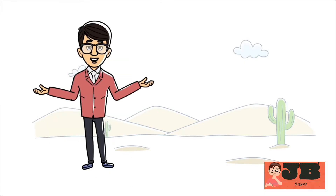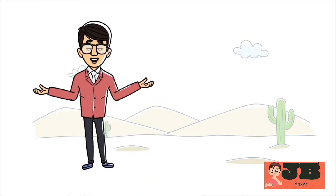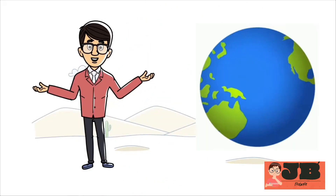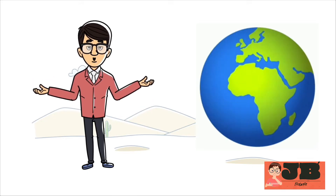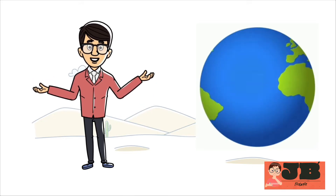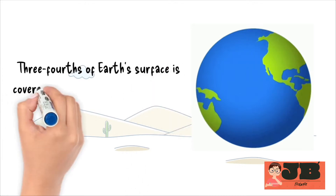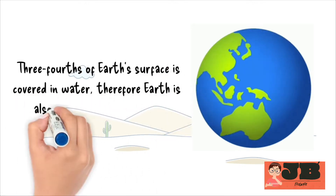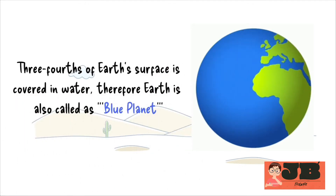Imagine that you are an astronaut looking at Earth from space. What do you see? A beautiful, mostly blue sphere. This blue color comes from the vast amounts of water covering our planet. In fact, nearly three-fourths of Earth's surface is covered in water. Therefore, Earth is called the Blue Planet.